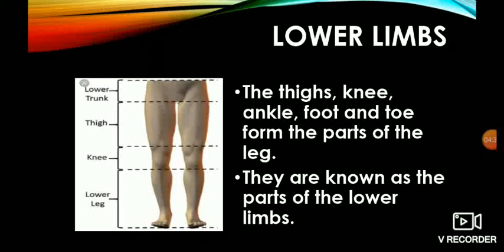Now we will learn about lower limbs. The thighs, knee, ankle, foot and toe form the parts of the leg. Lower limbs means leg. They are known as the parts of the lower limbs.